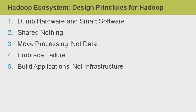Instead, they took what at the time was a very radical redesign to meet the desires for supercomputing. They began by listing five design principles for their new architecture. These included: dumb hardware and smart software; share nothing; move processing, not data; embrace failure; and finally, build applications, not infrastructure. Let us explore each of these in turn.